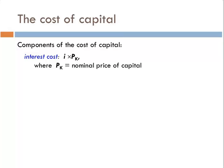So we want to think about how much capital costs. The first part is the interest cost — essentially, what would you give up, what other opportunities would you forgo in order to take on this opportunity? When we look at interest cost, we look at the nominal price of the capital times whatever our interest rate is.